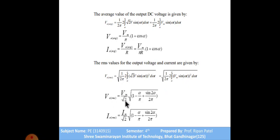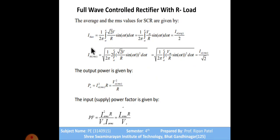The RMS output voltage for the bridge rectifier is: V_zero_rms = Vm/√2 × √(1 − α/π + sin2α / 2π), which is the same equation as the center tap. The power factor can also be found since the input is AC: power factor = I_zero_rms² × R / (Vs × I_zero_rms) = I_zero_rms × R / Vs. This power factor equation is mainly used when solving numerical examples.